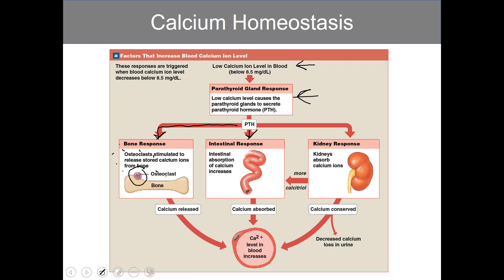At the intestines, PTH increases the absorption of calcium across the digestive lining. So as we eat calcium-rich foods and it moves through the intestines, that calcium can be absorbed, increasing blood calcium levels. At the kidneys, PTH helps retain calcium, decreasing the amount of calcium lost in urine. All three of those mechanisms raise blood calcium levels. Once we breach roughly 8.5 milligrams per deciliter, all of this shuts down — that is negative feedback.